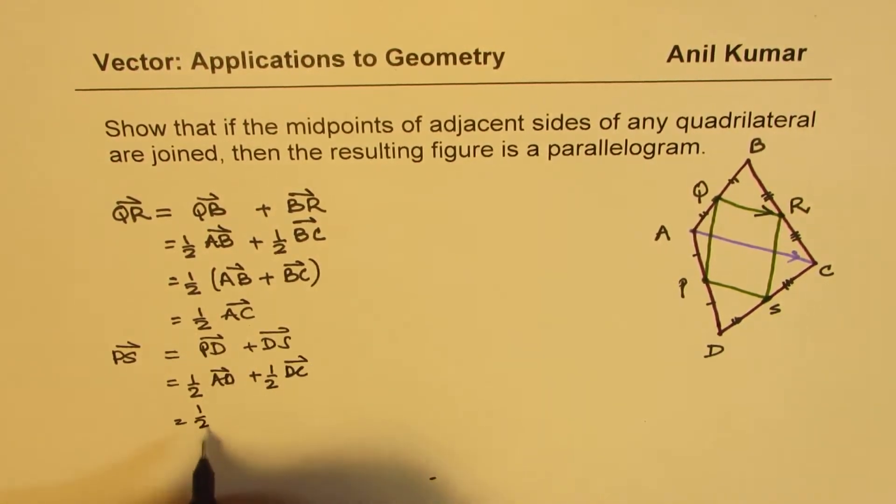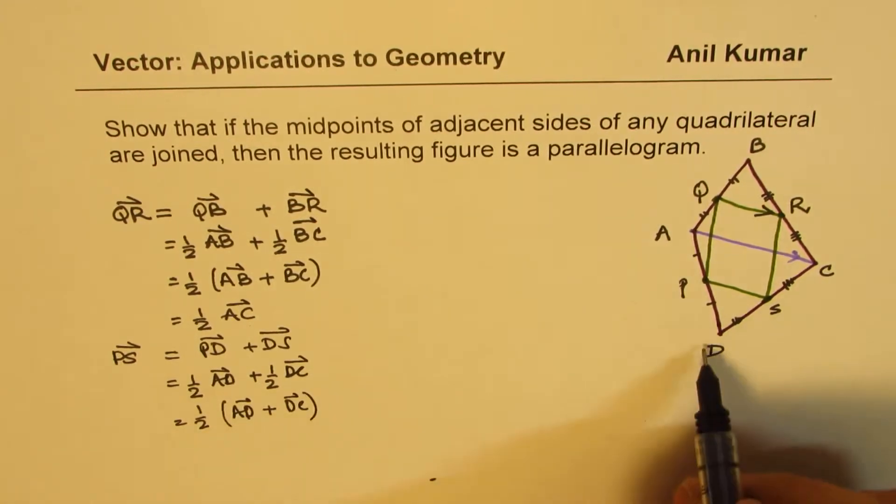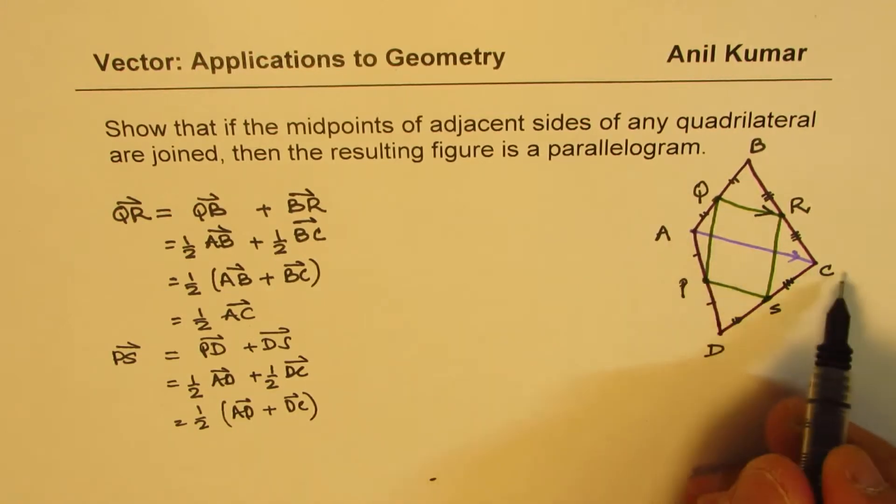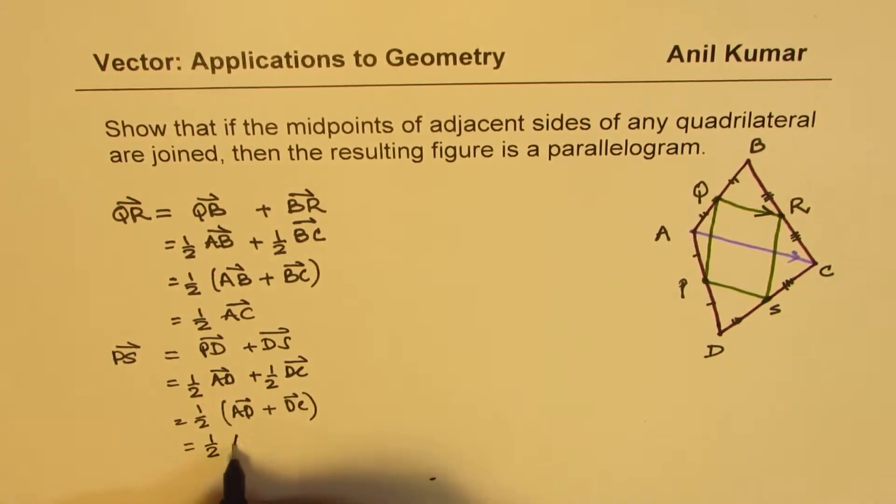So we could again take half common, so we get A, D plus D, C. And A, D plus D, C is A, C. So we get this as half of A, C.